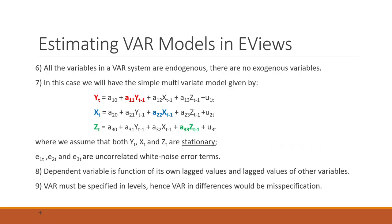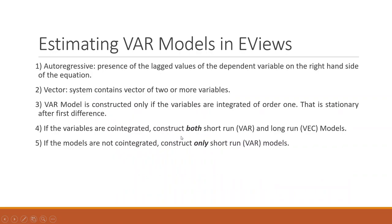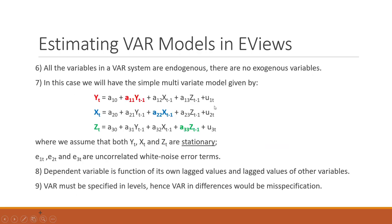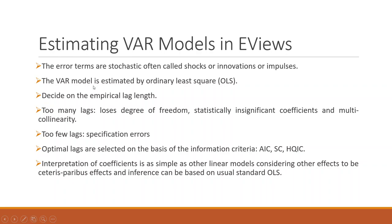All variables in the system are endogenous and there is no concept of an exogenous variable. This is an entire system of equations containing a vector of two or more variables. We assume that U1t, U2t, and U3t are uncorrelated white noise error terms. Yt, Xt, and Zt are stationary at first difference. The dependent variable is a function of its own lag value and the lag values of other variables. VAR must be specified in levels; VAR in differences would be a misspecification.